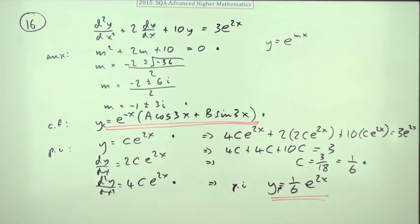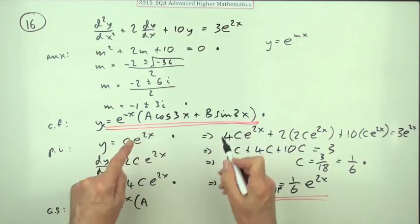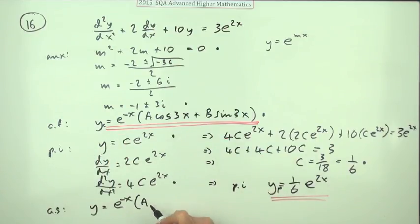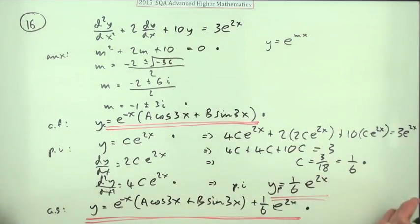I'll just squeeze it down here so I've got for my general solution y equals e to the negative x. In the marking scheme they've got that multiplied out, there's no need to do that because it's just as good in factorized form. We've got a cos 3x plus b sine 3x plus 1/6 e to the 2x. There's the general solution. And that's worth a mark, that's seven marks.